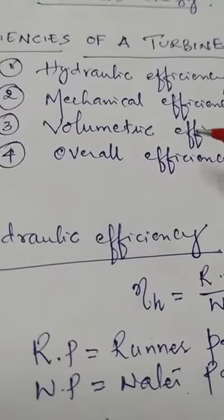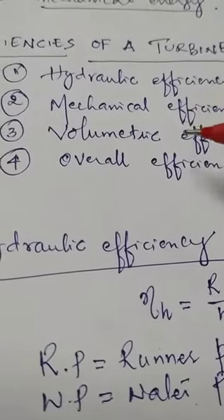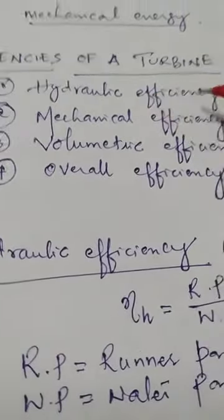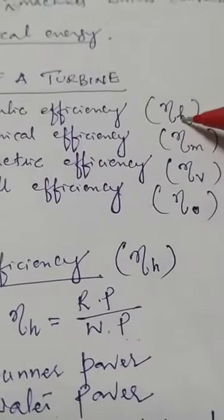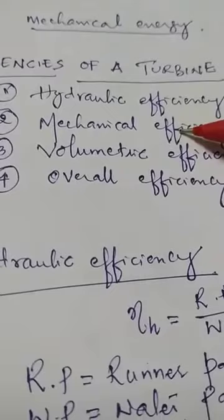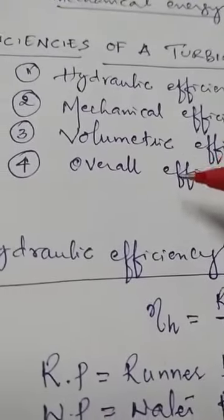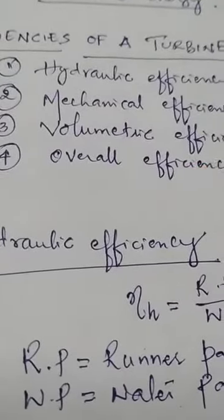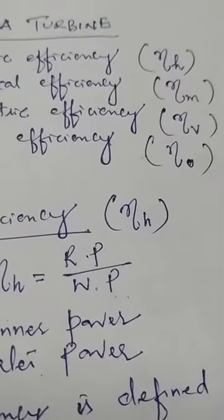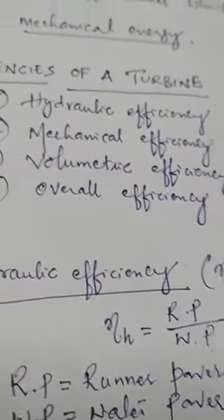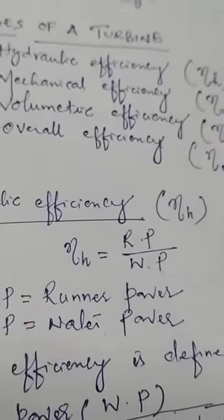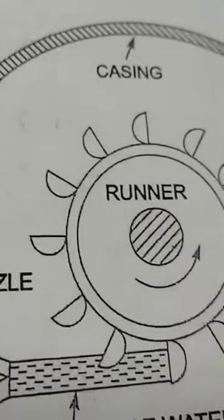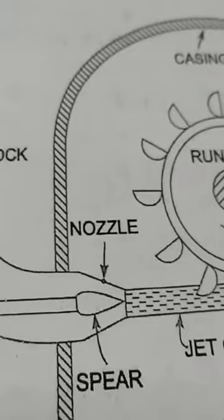Let us discuss one by one what all the efficiencies are. The first one is hydraulic efficiency, denoted by η_h. The second one is mechanical efficiency, η_m. The third one is volumetric efficiency, η_v. And the fourth is overall efficiency. Instead of going with theory, I will show a figure and explain there — you can understand exactly what all these efficiencies are.